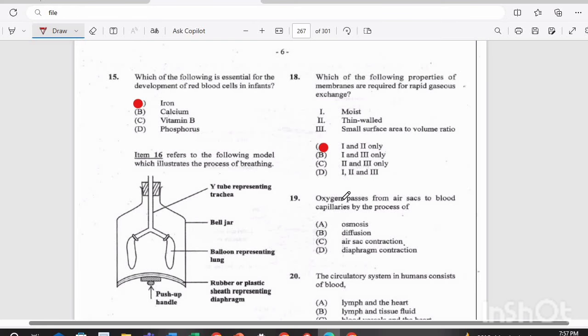Question 19. Oxygen passes from air sacs to blood capillaries by the process of, is it A, osmosis, B, diffusion, C, air sac contraction, or D, diaphragm contraction? The answer there is B, diffusion.